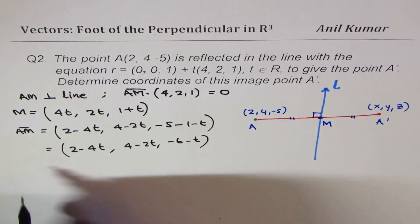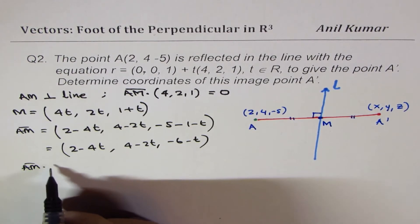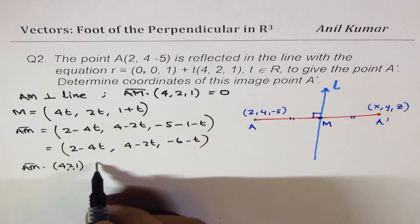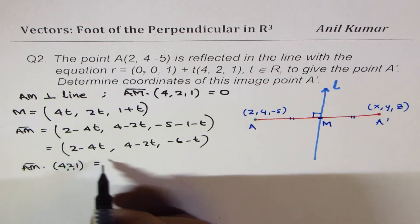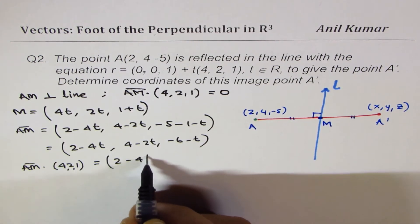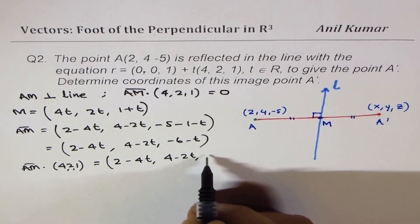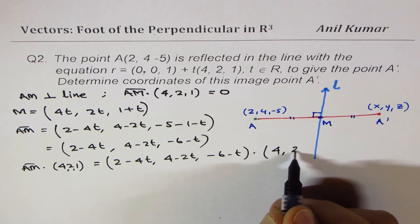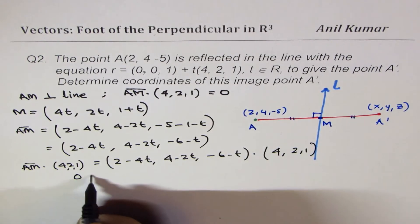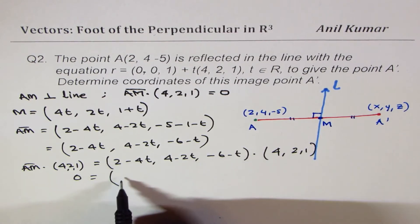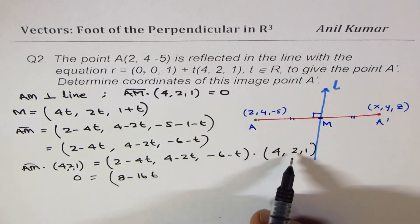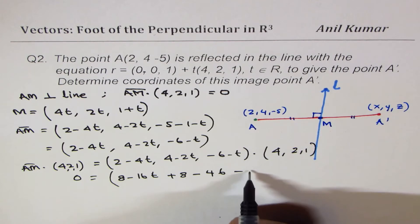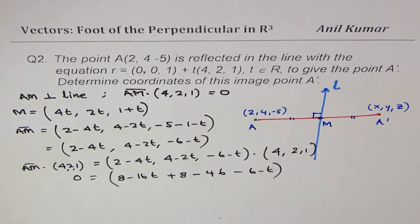Now the dot product AM · (4, 2, 1), the direction vector, should equal zero. So we write: (2 minus 4T, 4 minus 2T, minus 6 minus T) · (4, 2, 1) equals zero. Expanding: 4 times (2 minus 4T) gives 8 minus 16T, plus 2 times (4 minus 2T) gives 8 minus 4T, plus 1 times (minus 6 minus T). All this equals zero.